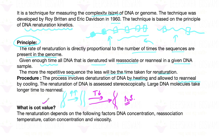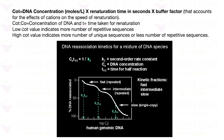What is the Cot value? Re-naturation depends on some particular factors: DNA concentration, re-association temperature, cation concentration, and the viscosity of the medium. Cot is calculated as: Cot = DNA concentration (moles per liter) × re-naturation time (in seconds) × buffer factor. The buffer factor accounts for the effect of cations on the speed of re-naturation.